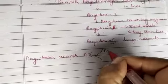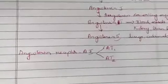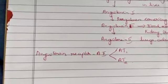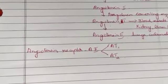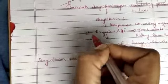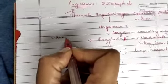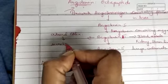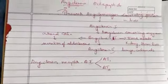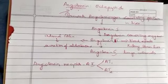Especially angiotensin 2, specified as A2, has got two receptors: A1 receptors and A2 receptors. It acts via A1 and A2 receptors. Angiotensin 1 is rapidly converted to angiotensin 2, and angiotensin 2 is rapidly converted to angiotensin 3. Angiotensin 2 stimulates the adrenal cortex for the secretion of aldosterone.